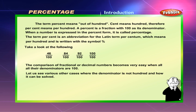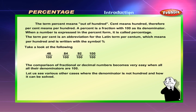Percentage introduction. The term 'percent' means 'out of hundred' — 'cent' means hundred, therefore percent means per hundred. A percent is a fraction with hundred as its denominator. When a number is expressed in the percent form, it is called percentage. The term percent is an abbreviation for the Latin term 'per centum', which means per hundred, and it is written with the symbol %. For example: 46/100, 84/100, 92/100, 100/100.